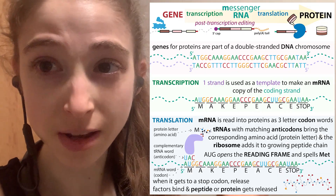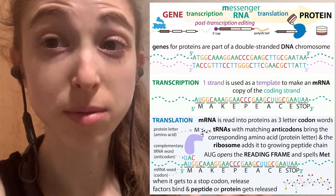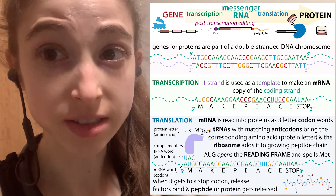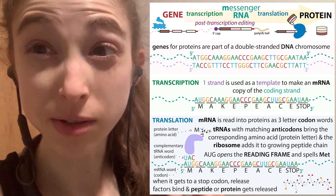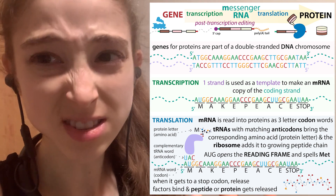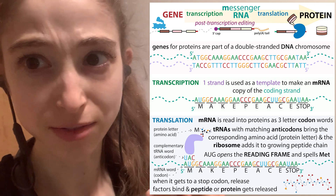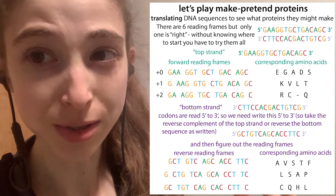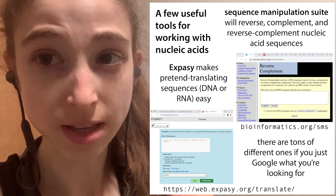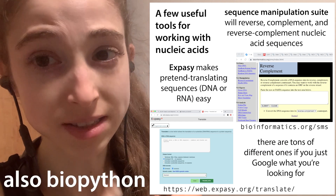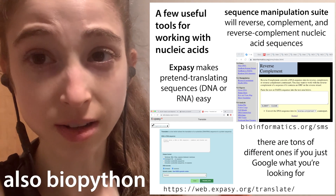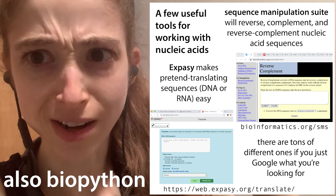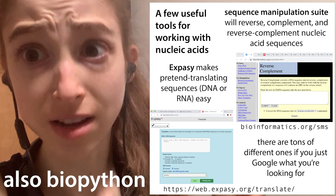A lot of times in biochemistry, we're dealing with sequences. These can be nucleic acid sequences — DNA or RNA — or protein sequences, in which case we're dealing with amino acids. Our cells know how to go between all of these different things, but our brains need a little help from computers. There are some computer programs you can use to help make this easier, and there are also some conventions about when to use what strand, in which direction, and all this stuff. So let's dive in.